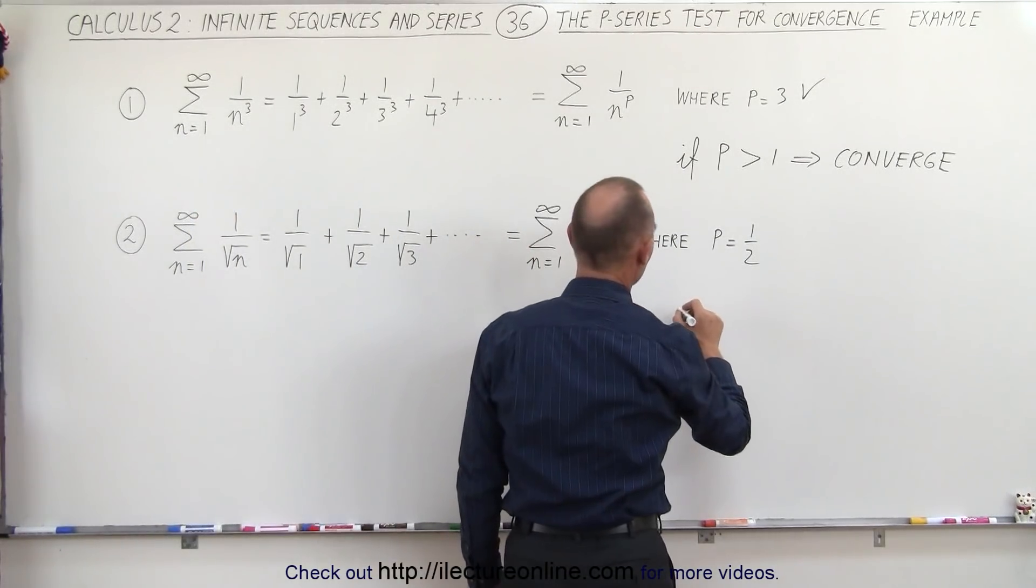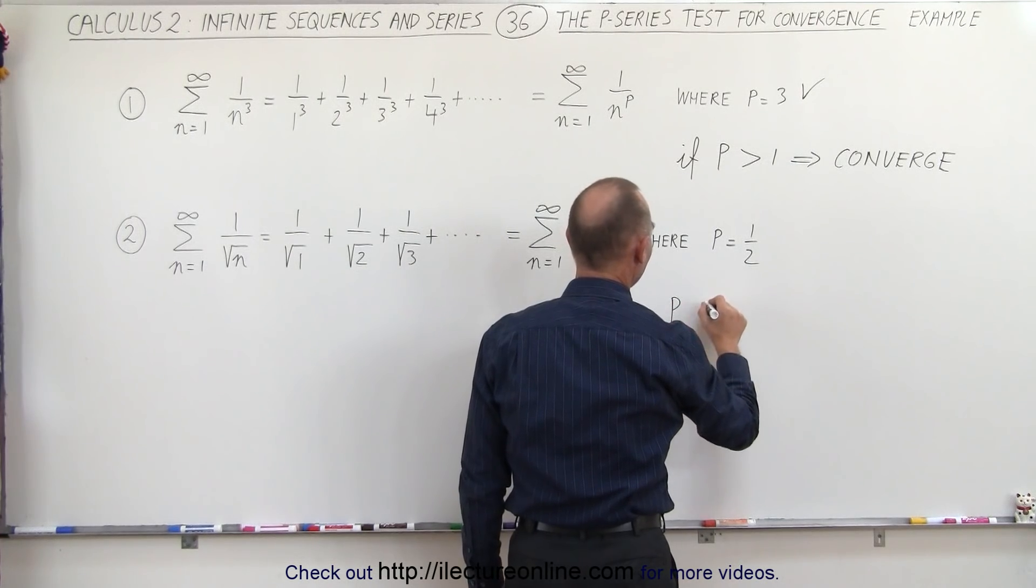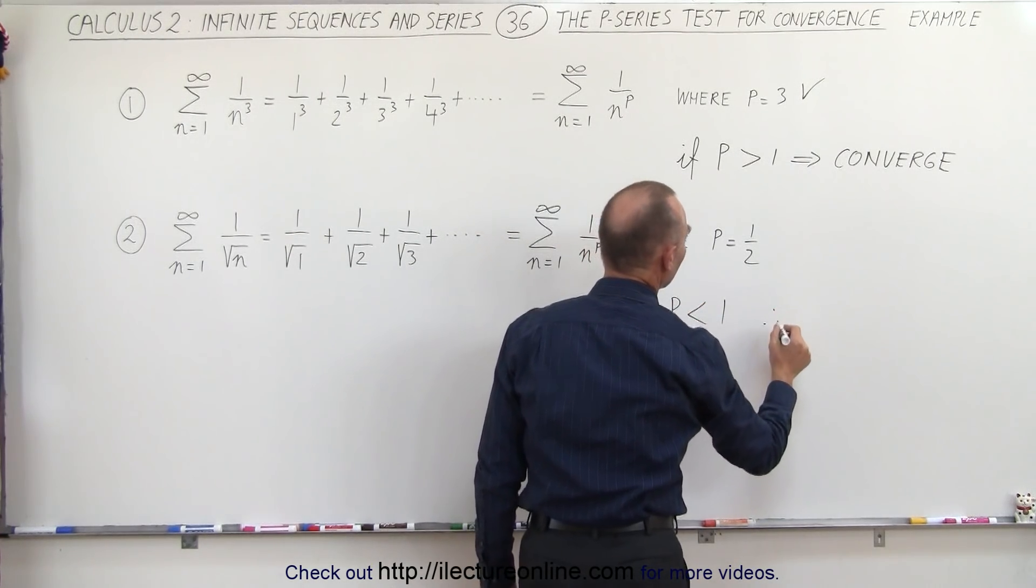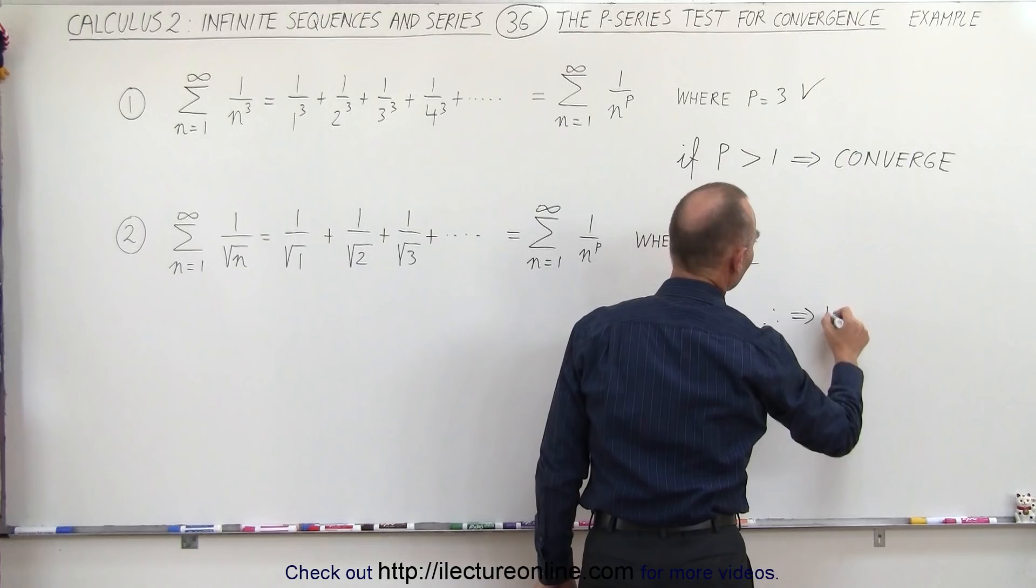But the second example, here we can see that p is less than 1, and therefore we can conclude that the series diverges.